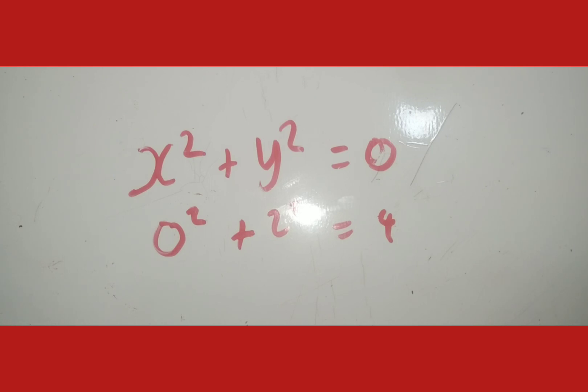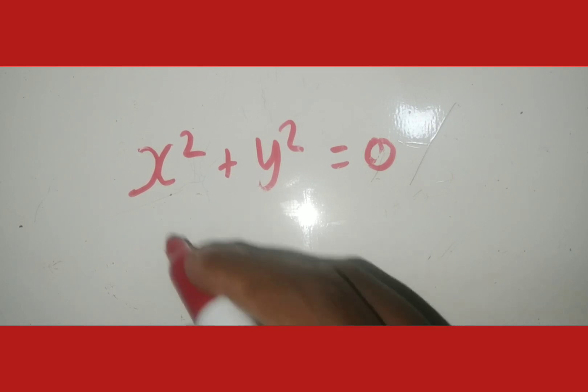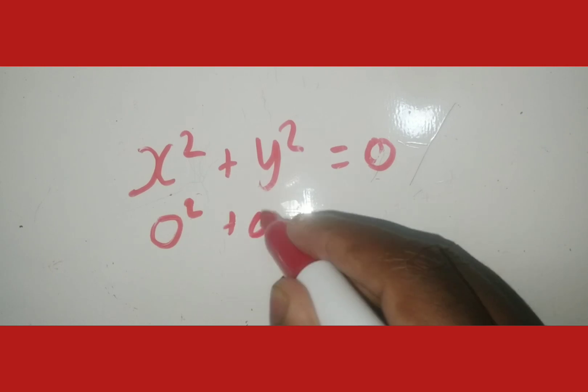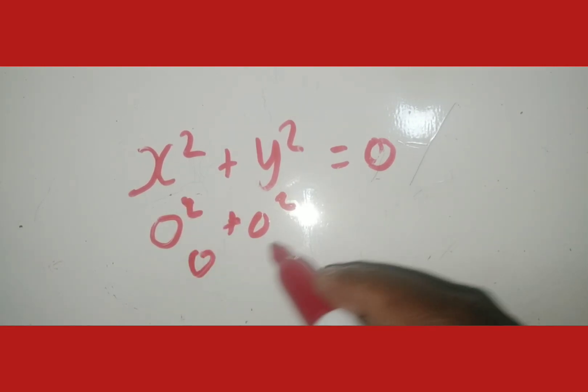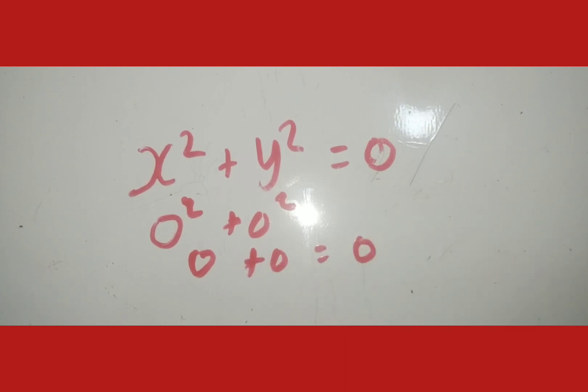The only way to get 0 when I've got two squares adding is for both of them to be 0. There's nothing else. If I put a negative, that negative becomes positive because when I square it, it's positive. You can test it. So the only way for me to get 0 when I'm adding two squares is for both of them to be 0. So if we've got 0² + 0², we have 0 and 0. And of course, 0 + 0 is 0.